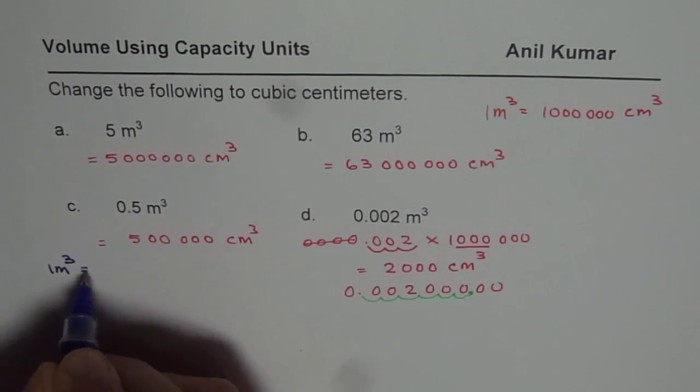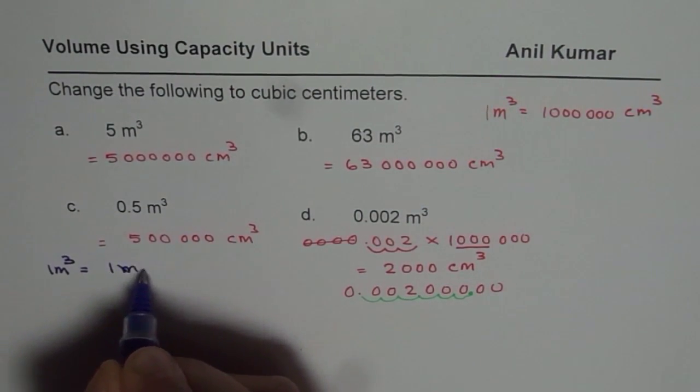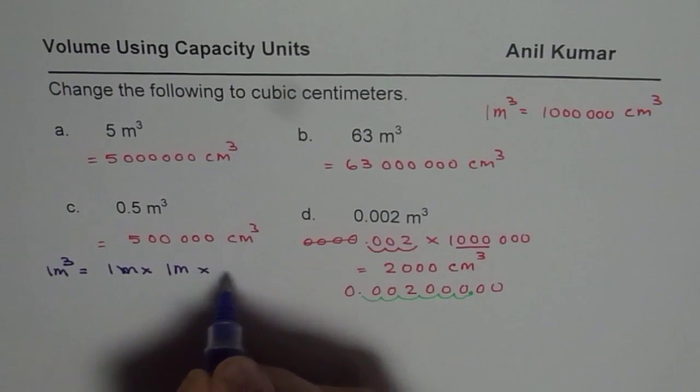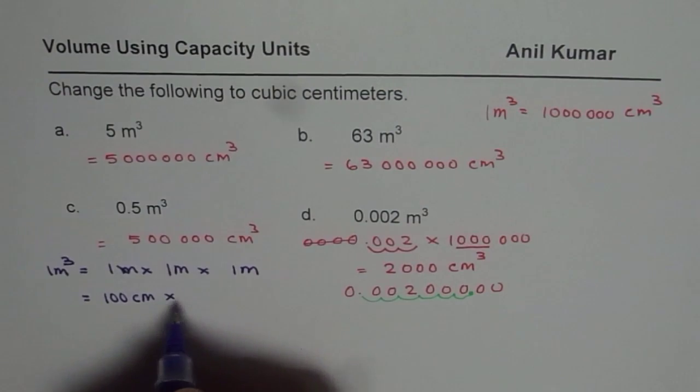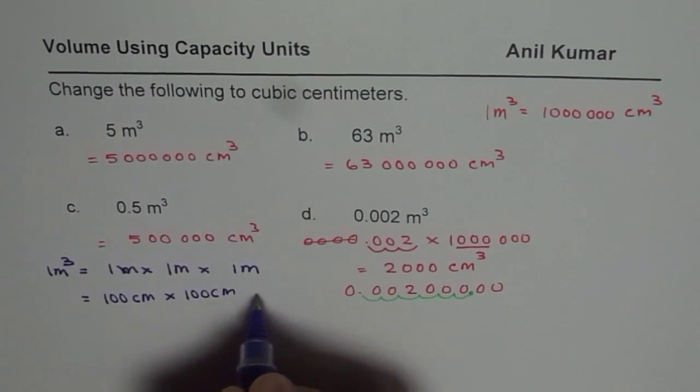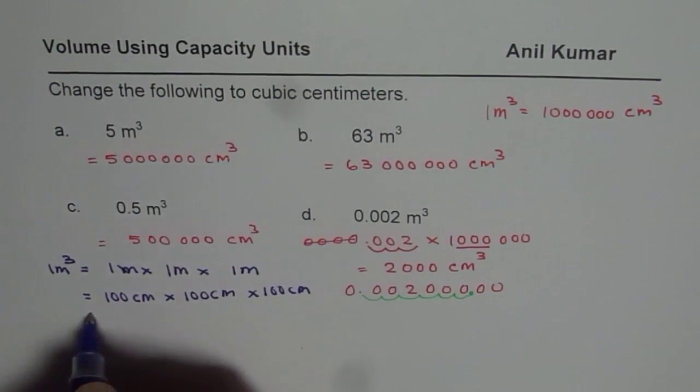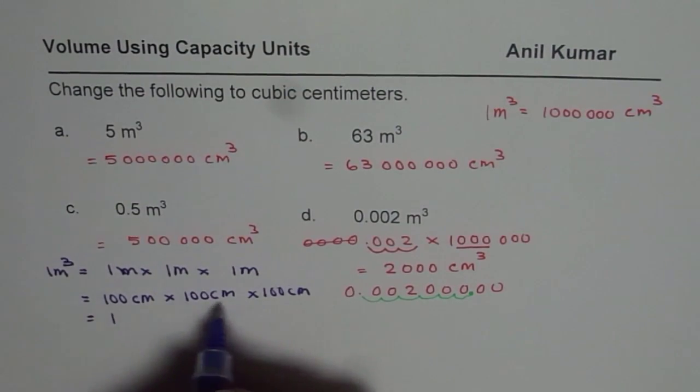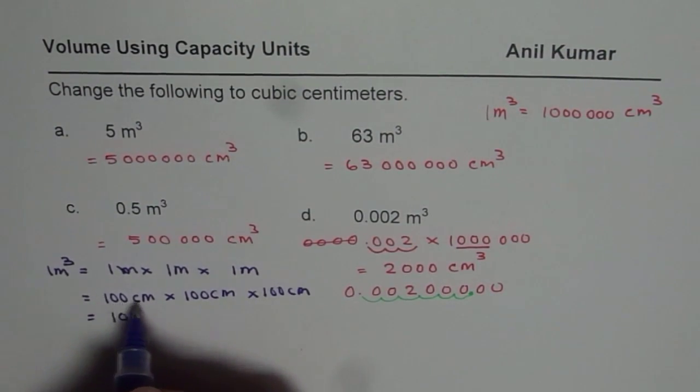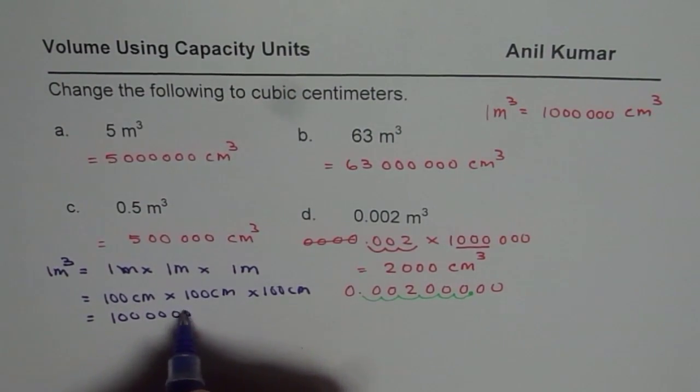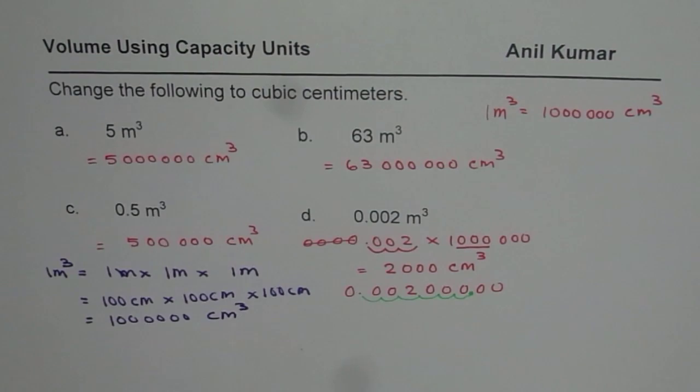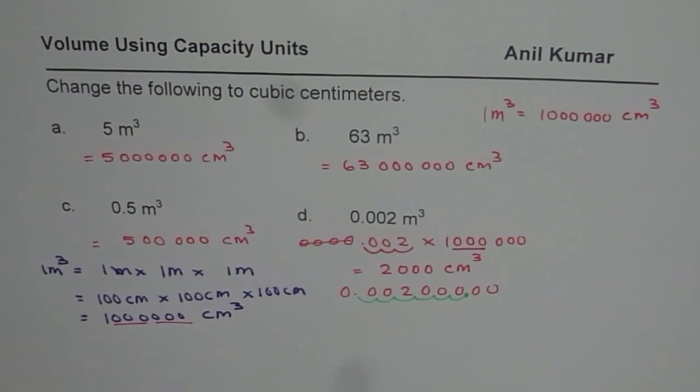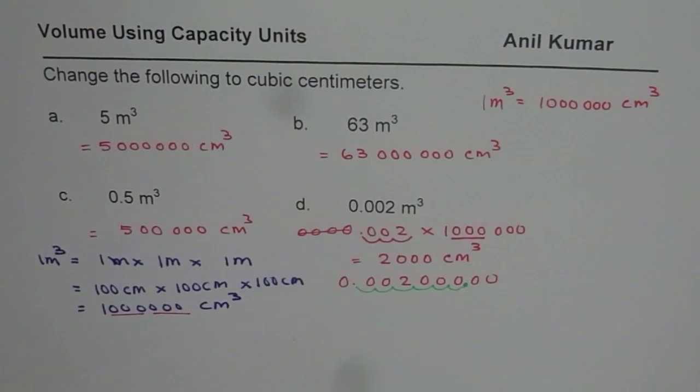I hope you remember how we get this relation. 1 meter cube means 1 meter times 1 meter times 1 meter. Every meter equals 100 centimeters. 100 centimeters times 100 centimeters times 100 centimeters. When you combine or multiply, you get 6 zeros—2, then 2 more and 2 more centimeter cube. That is 1 million. So 1 meter cube is indeed 1 million centimeter cube.